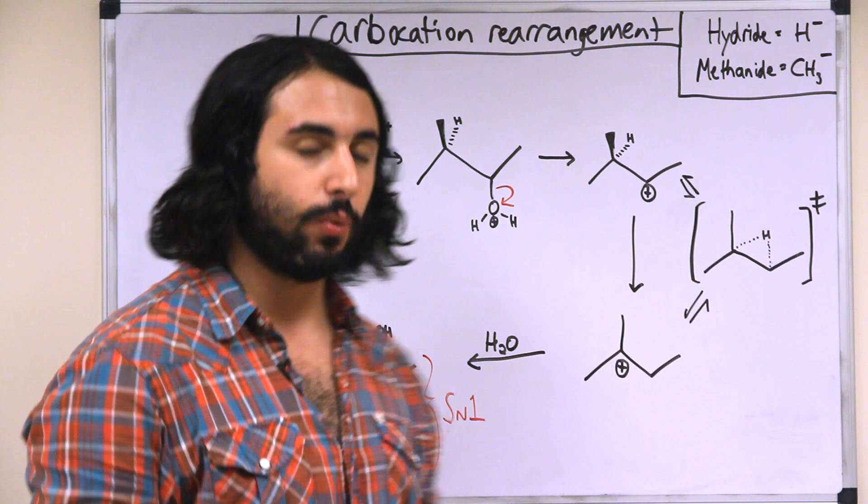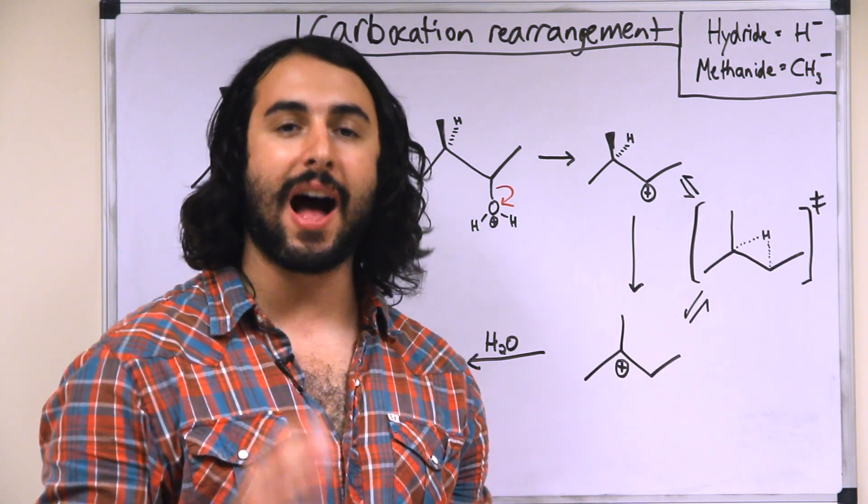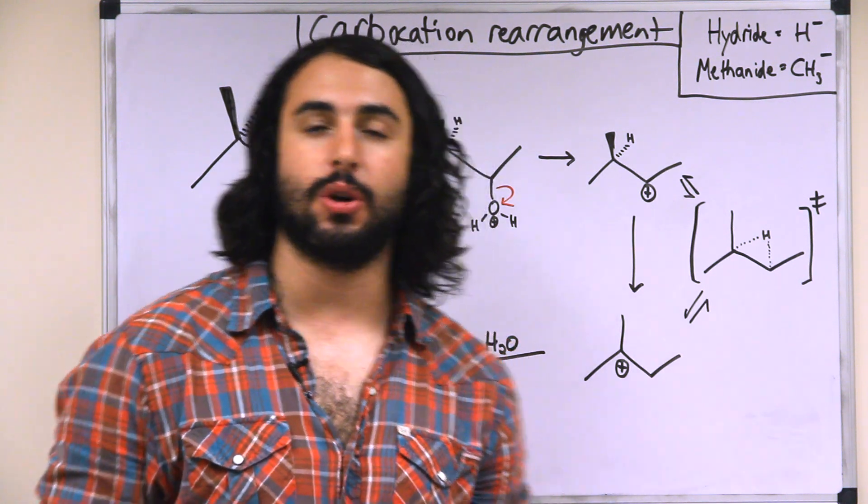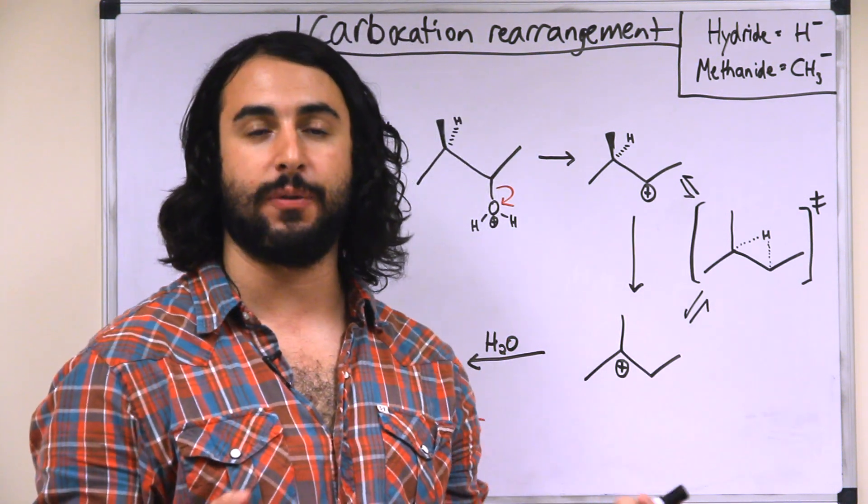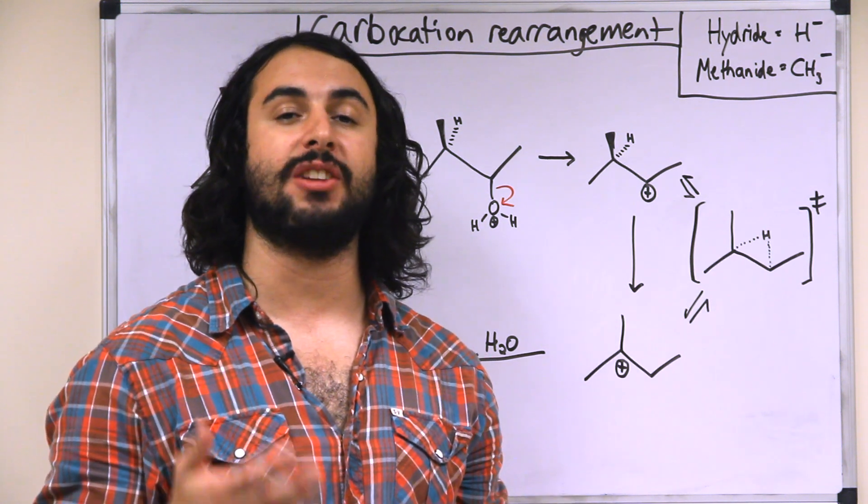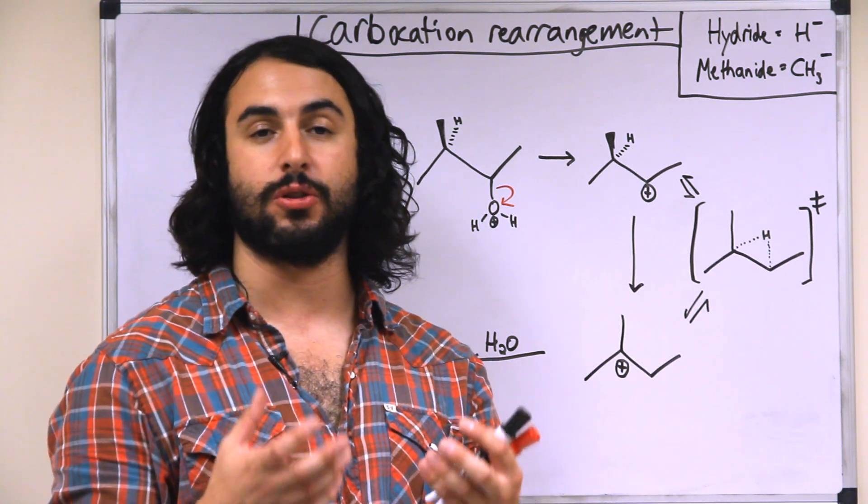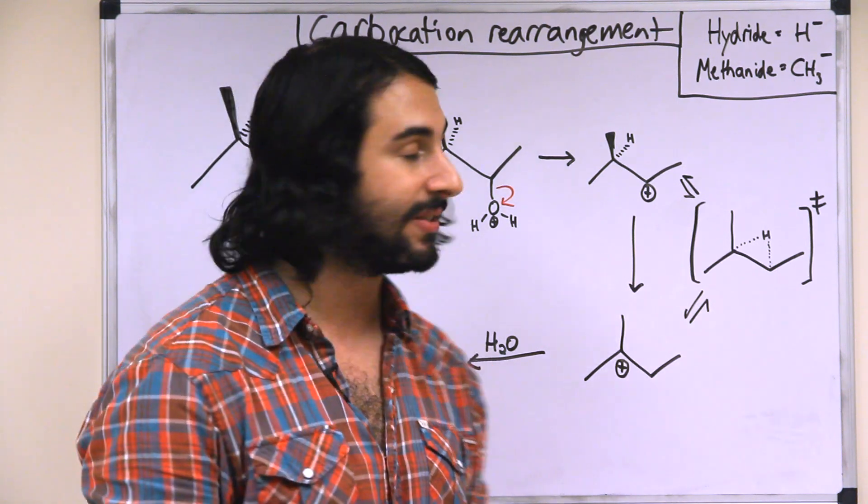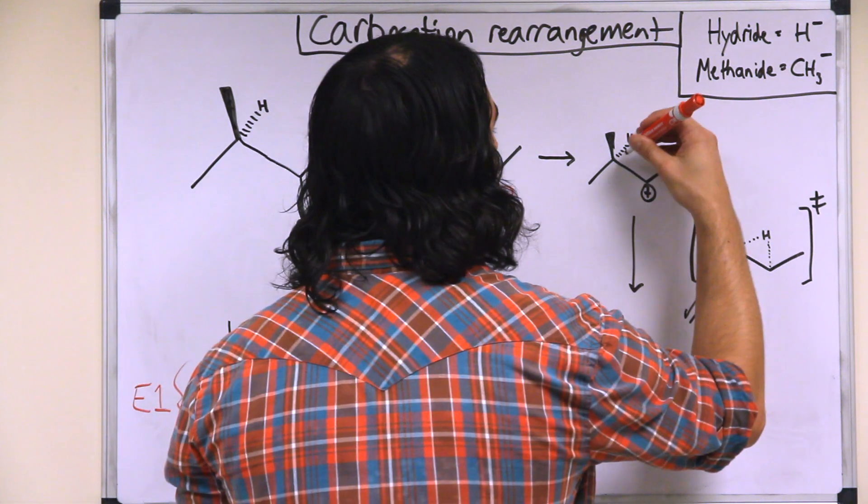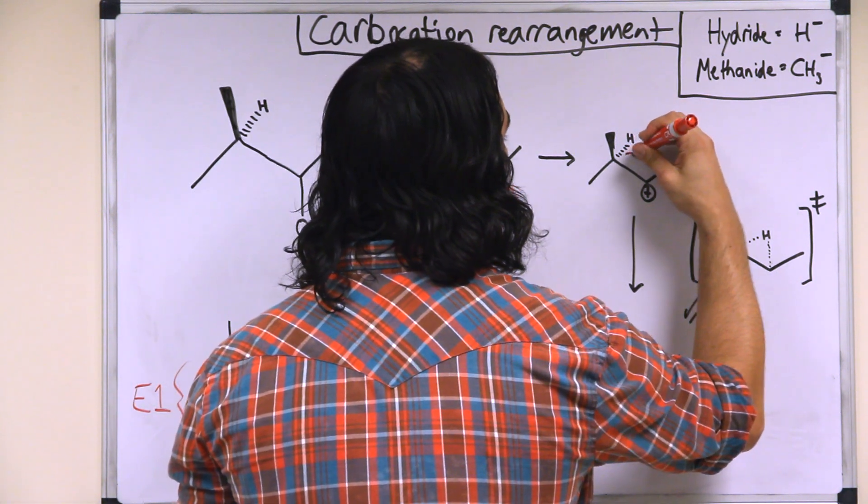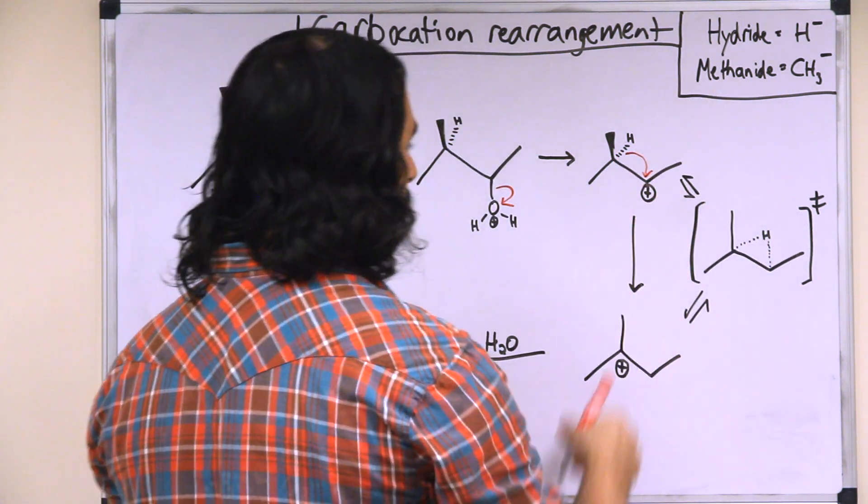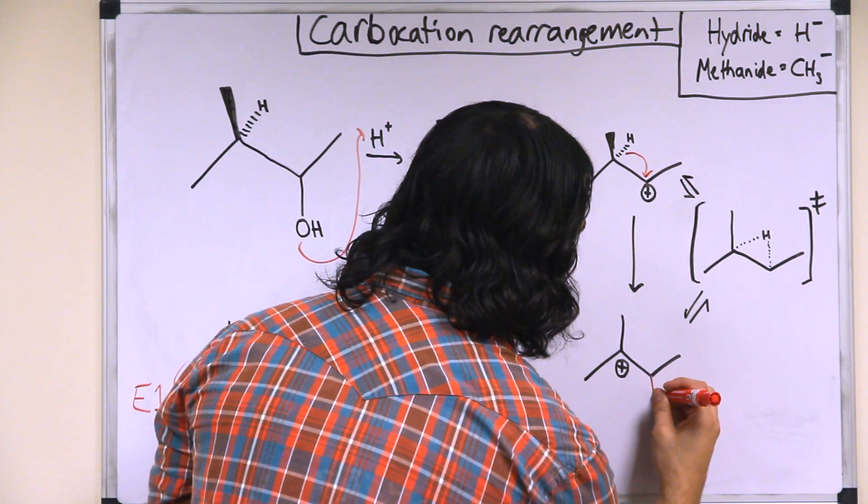So in this case, we can have something called a hydride shift. Now a hydride shift is H-, so typically we're used to, if we're seeing hydrogen as an ion, seeing it as H+, a proton. But we can also have H-, this is basically a hydrogen nucleus with a pair of electrons. So that's H-, and a hydride shift means that this hydrogen atom with both of the electrons in this bond can basically shift over. So here's that hydrogen.